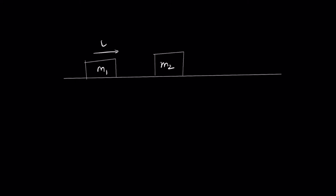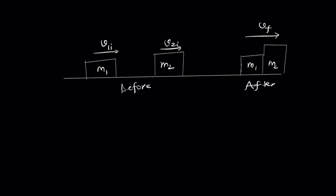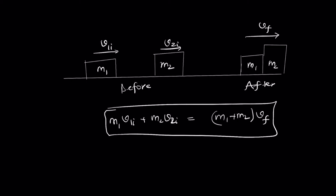For a perfectly inelastic collision, if m1 moves with v1i and m2 moves with v2i, and they stick together, the combined mass travels at a single final velocity vf. The conservation of momentum equation becomes: m1·v1i + m2·v2i = (m1 + m2)·vf. Therefore, vf = (m1·v1i + m2·v2i) / (m1 + m2).